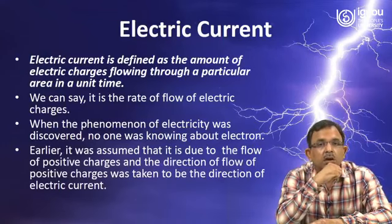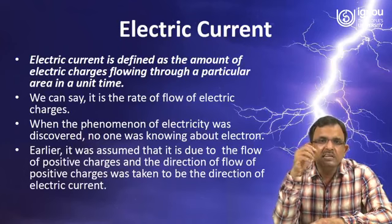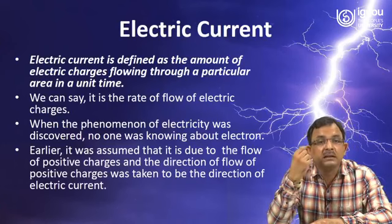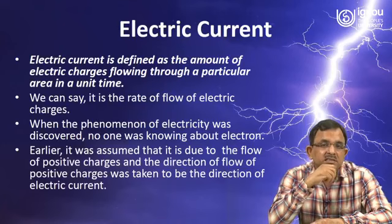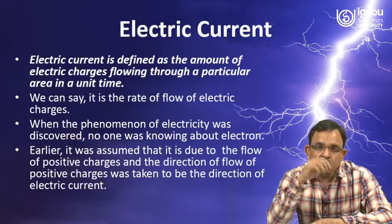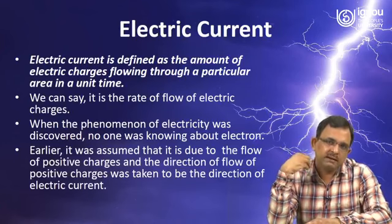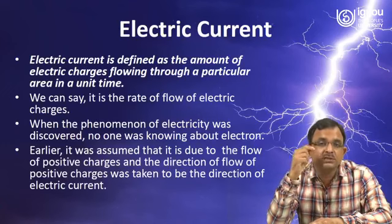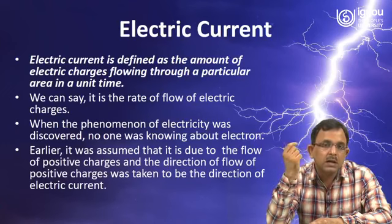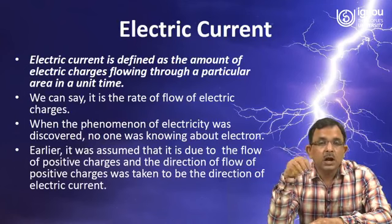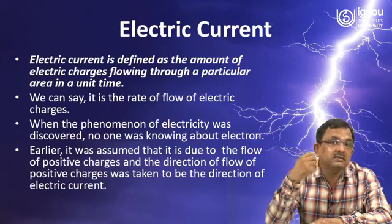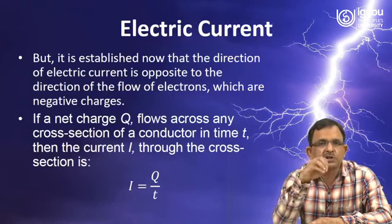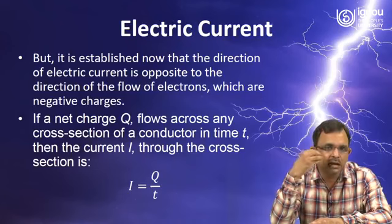When we talk about electric current, we define it as the amount of electric charges flowing through a particular area in a unit time — or we can say electric current is the rate of flow of electric charges. When electricity was first discovered, no one knew about electrons, so it was assumed that current was due to the flow of positive charges. Later, when the electron was discovered, it was established that electric current is generated due to the flow of electrons, and the direction of current is opposite to the direction of flow of electrons, which are negatively charged.